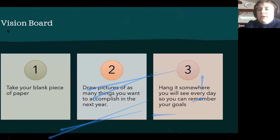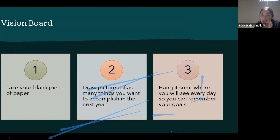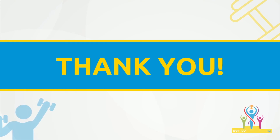Natalia: If you have a blank piece of paper, you can do a vision board at any time. Take your blank piece of paper and draw or write pictures of anything you might want to accomplish in the next year, six months, month, or week. If you hang it somewhere you see every day, it's a great way to remember your goals and work towards them. We don't have time to do this today because we have our talent show in about 10 minutes, but this will be recorded and you can go back and look at it — and then you'll have a little poster with all your goals to look at every day.